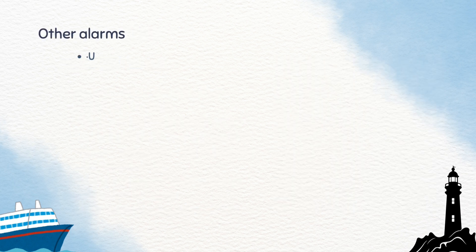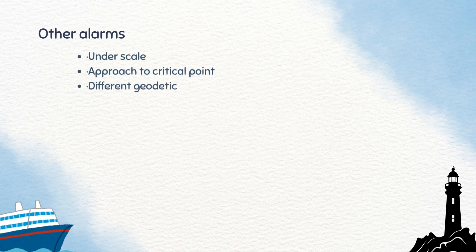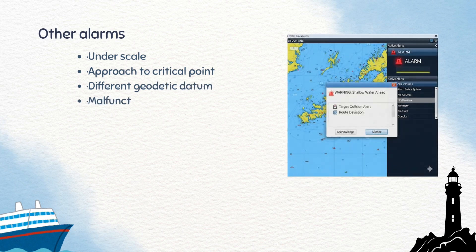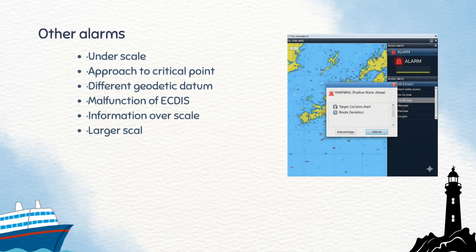EGDIS gives some other alarms also. They are: underskale alarm, approach to critical point alarm, different geodetic datum alarm, malfunction of EGDIS alarm, information overskale alarm, large-scale ENC available alarm, navigational information alarm, position test failure alarm, and anti-grounding alarm.